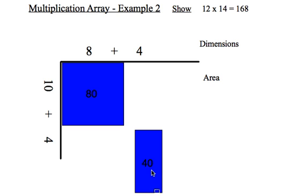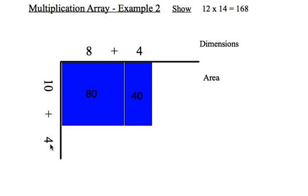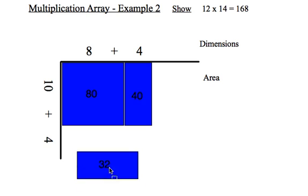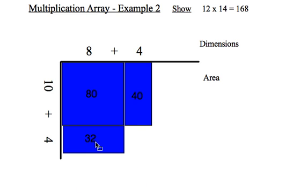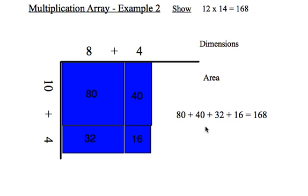10 times 4 is 40. 4 times 8 is 32. And lastly, 4 times 4 is 16. If we add all of those together, 80 plus 40 plus 32 plus 16, I get 168 again.